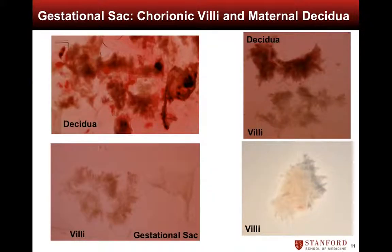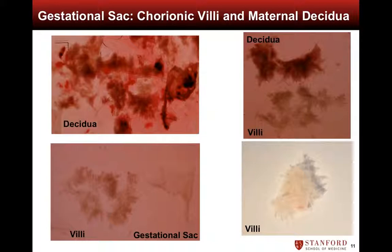Differentiating chorionic villi and maternal decidua can be challenging, so we demonstrate several examples here. The top left image is of decidua, compared to the delicate villi shown on the bottom left, adjacent to the almost transparent gestational sac. On the right we show an example of decidua adjacent to villi and below an image of villi alone. Notice the delicate, frond-like architecture that is characteristic of chorionic villi.